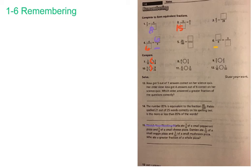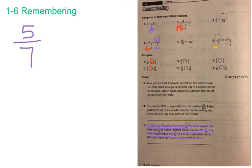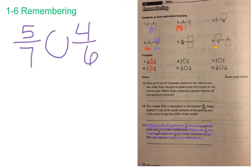Now let's look at our word problems — numbers 13 and 14. Skip the stretch your thinking section and put an X through it. Number 13 reads: Rosa got 5 out of 7 answers correct on her science quiz — that's 5 over 7. Her older sister Anna got 4 out of 6 correct on her science quiz — that's 4 over 6. Which sister answered the greater fraction of the questions correctly? This is just a comparison, and now that we've set the problem up, you know how to compare fractions. Use any of our methods, and make sure you add your label.